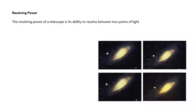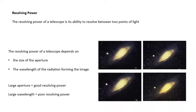What does resolving power depend on? It depends on two things. The resolving power of a telescope depends on the size of the aperture. The aperture is the hole at the front. If you're talking about a refracting telescope, it's the size of the objective lens, the big lens at the front. The size of the aperture. It also depends on the wavelength of the radiation. Basically, a large aperture means good resolving power. A large wavelength means poor resolving power. You get the best resolving power if you've got a large aperture and you're using a small wavelength.